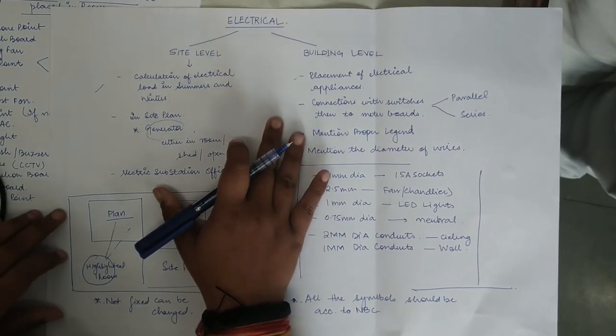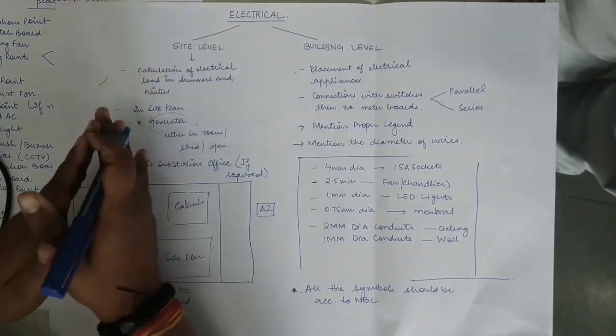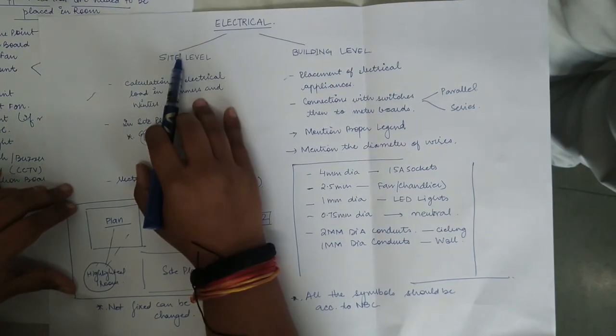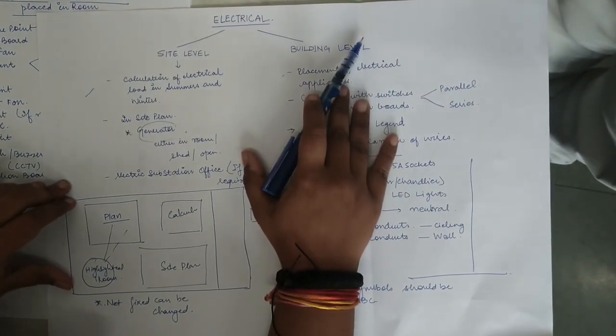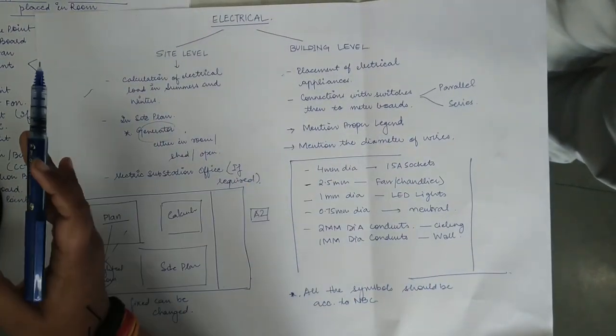Good morning everyone. Today we are talking about the sheet of electrical. This sheet will be firstly divided into two parts: one will be at the site level and another is at the building level, as you have already been told in the class.